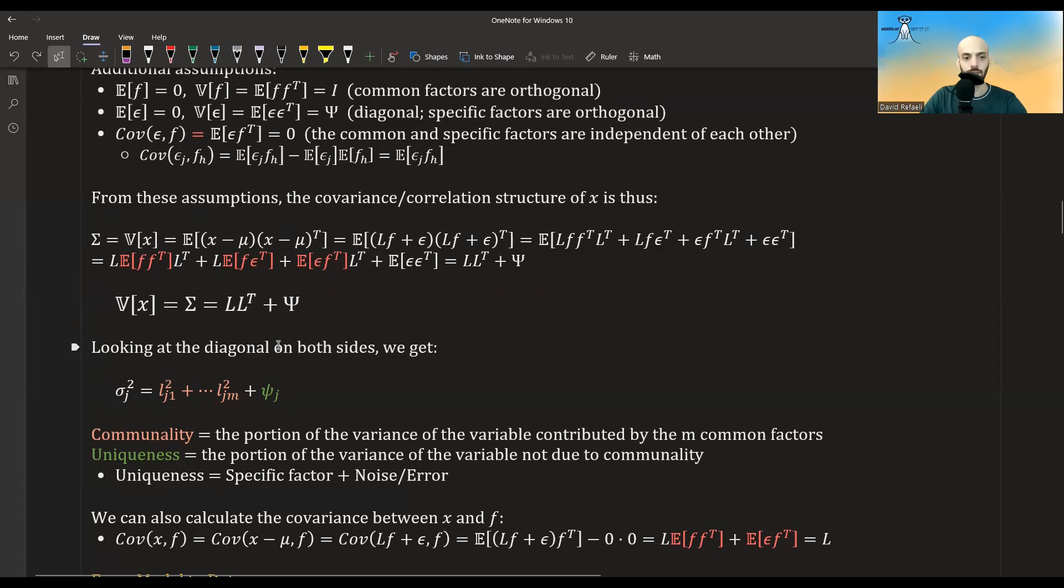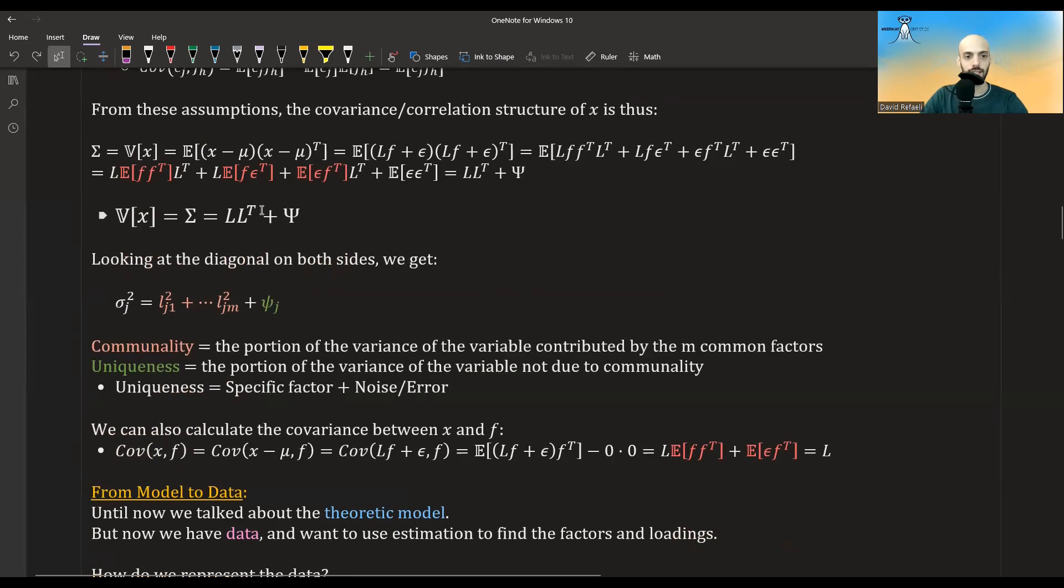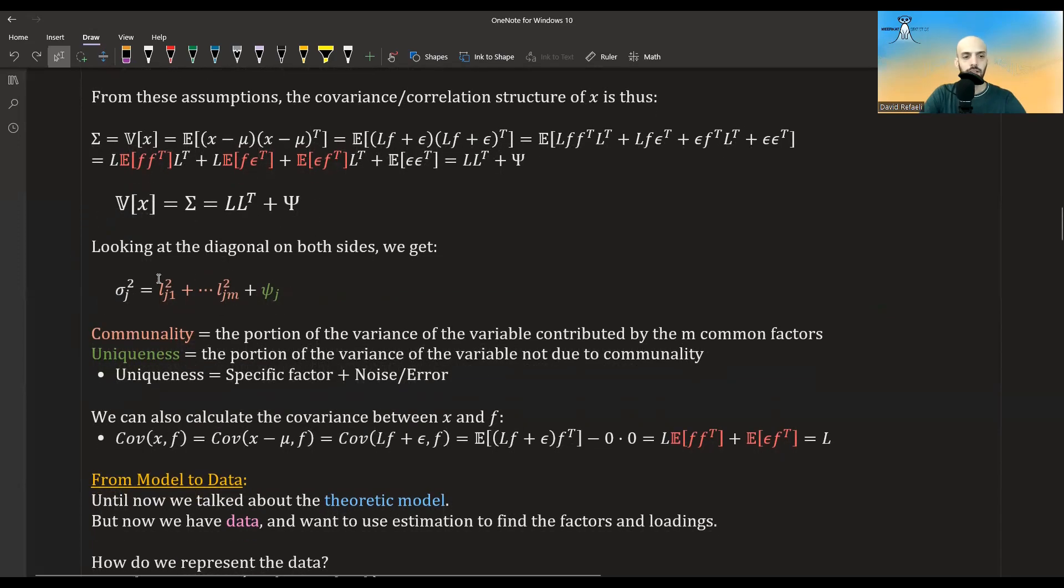Looking at the diagonals on both sides, so the diagonal of this matrix will give the variance of each variable, so sigma squared of some variable, let's say the j variable, and if we look at this side we will get this thing over here. These are from the l times l transpose, and this is from the Psi, and now looking at the right hand side, these terms over here, the terms that come from the l times l transpose, we will name them communality, and we'll interpret them as the portion of the variance contributed by the m common factors.